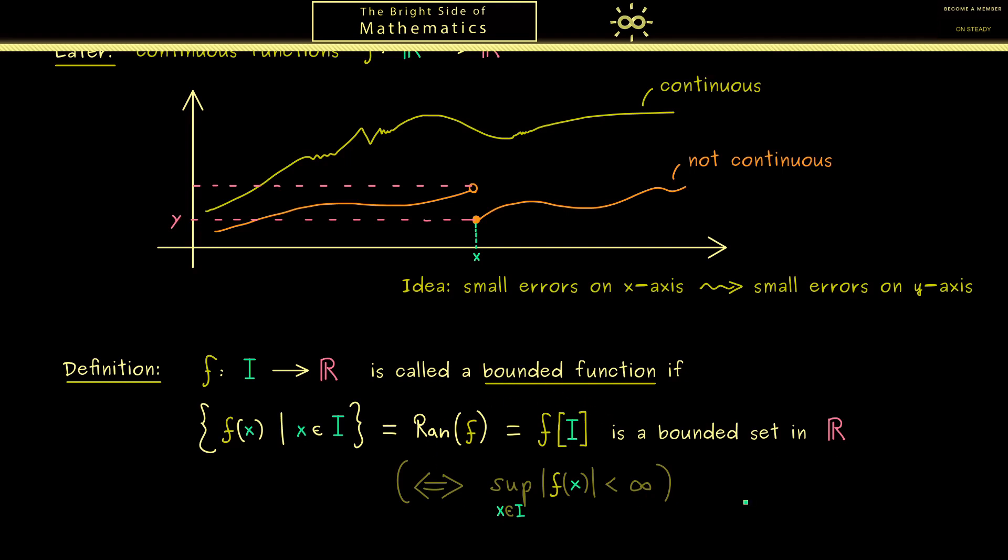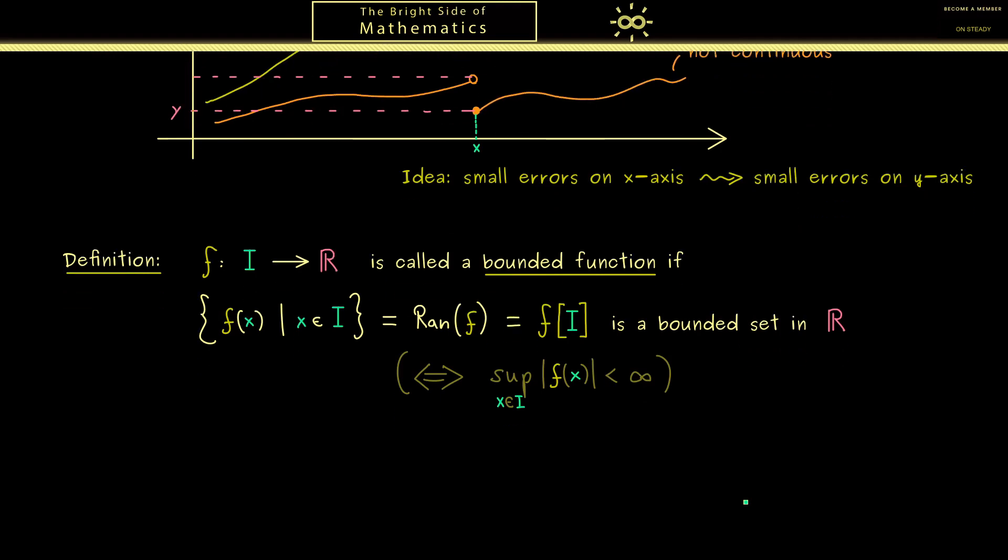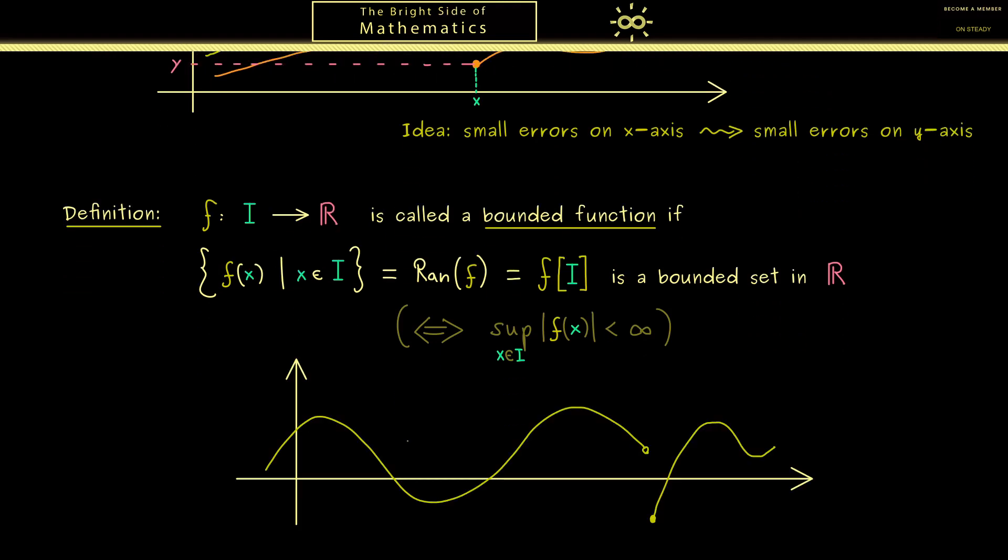Also the visualization is very clear. The graph is bounded in the y direction. So for such a graph you can draw a horizontal line such that the whole graph is below this line. Also on the bottom you can draw a line such that the graph is above this line.